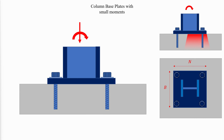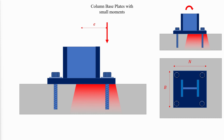A moment can be created by adding an eccentricity to the axial load. For small eccentricities, the axial force is resisted by bearing only. For large eccentricities, it is necessary to use anchor rods.